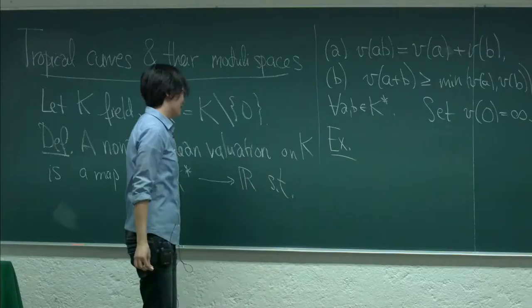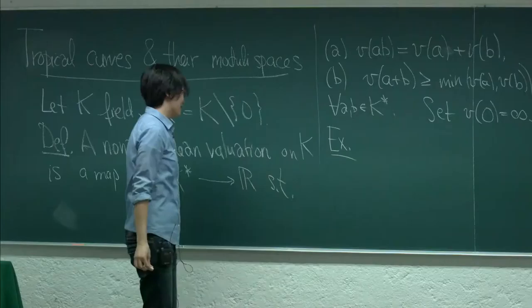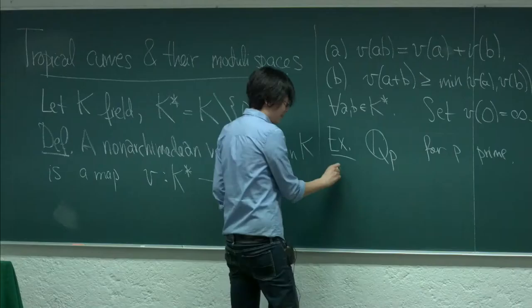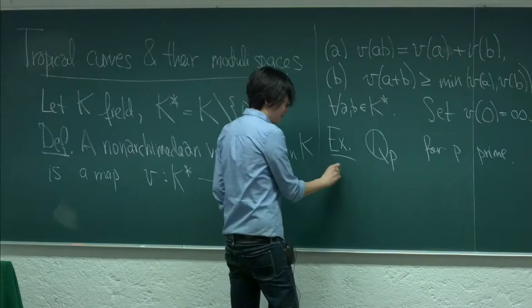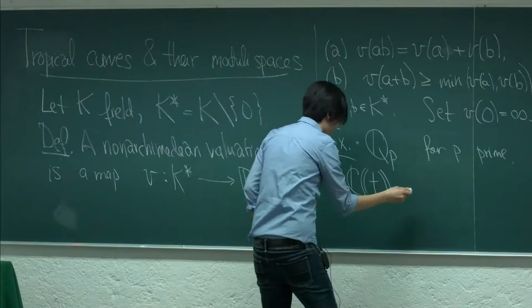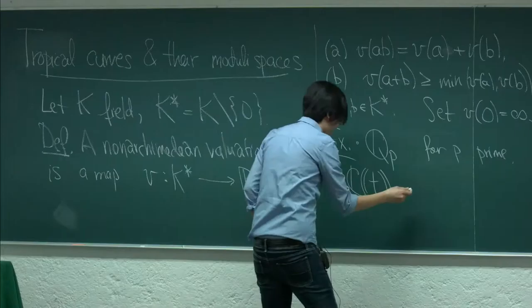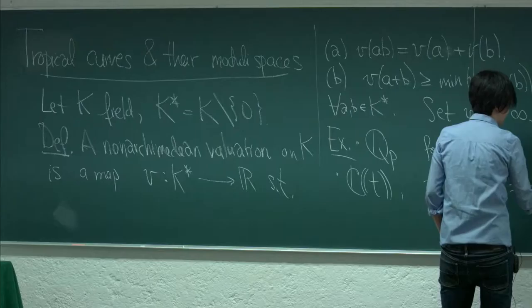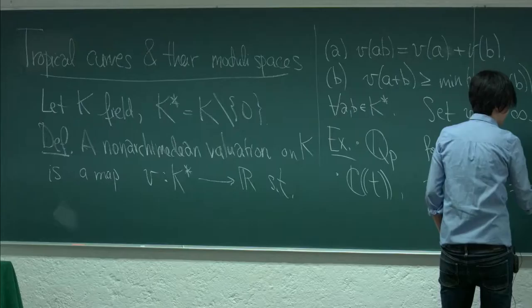For example, if you're inclined towards number theory, you'll immediately think of the p-adic numbers — the completion of Q with respect to the p-adic valuation for any prime p. Another example favored by tropical geometers is the field of Laurent series in a single variable t. The valuation of a sum of a_i t^i, where i ranges over the integers, is the minimum exponent with a nonzero coefficient — the minimum i such that a_i is nonzero.